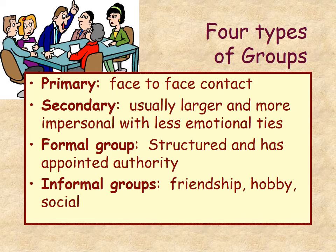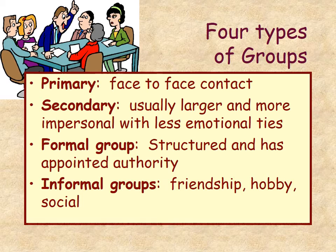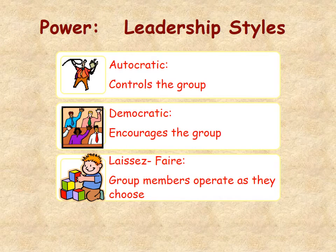A formal group is structured and has appointed authority — very much like a classroom where you meet every week and your teacher is your appointed authority. An informal group is like a friendship group or a hobby group — people who get together socially, maybe belonging to a dinner group, riding bikes together, going to the gym, or taking a spinning class together.